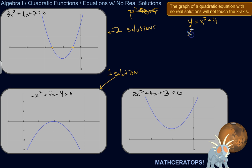So I could just rewrite this as x squared plus 4 equals 0. Now I could keep working here.